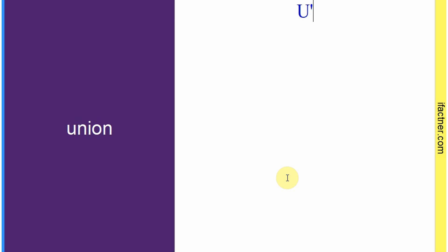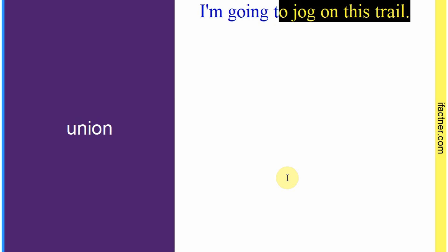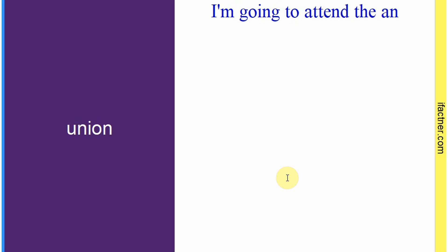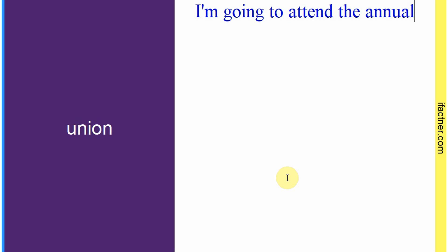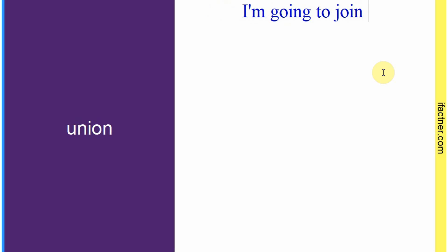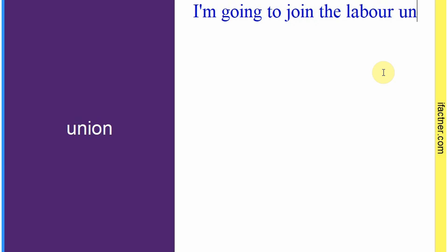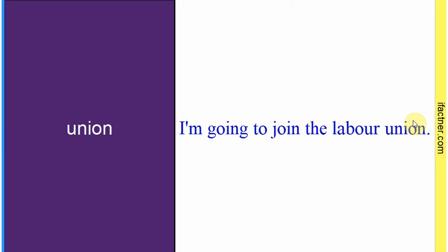Word hai: 'union'. 'Union' different meanings mein use ho sakta hai. Sentence banaate hain: 'I'm going to join the labor union.' Mein mazduron ki union — mazduron ki jamaat — us ko join karne ja raha hoon. Toh 'union' hota hai — ikattha hona, ya ikatthe ho ke jo ek cheez banti hai us ko 'union' kehte hain. Sentence banaaya: 'I'm going to join the labor union.'